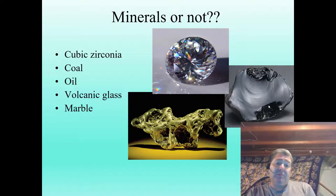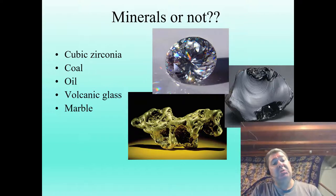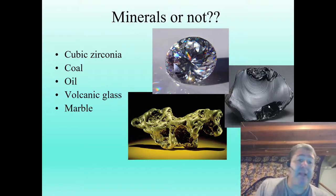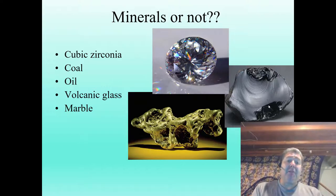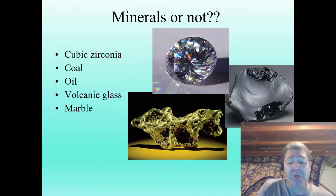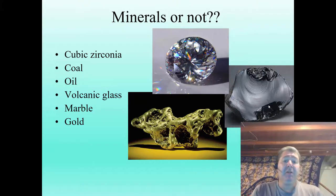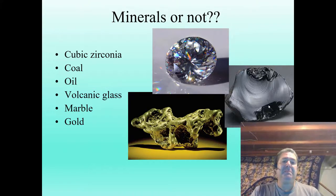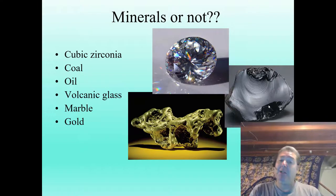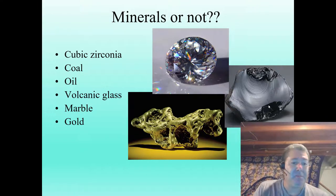Marble. Marble is not a mineral — it is a rock made up of a mineral called calcite. Gold — yes, gold is a mineral. Gold is an element, but it is also a mineral.